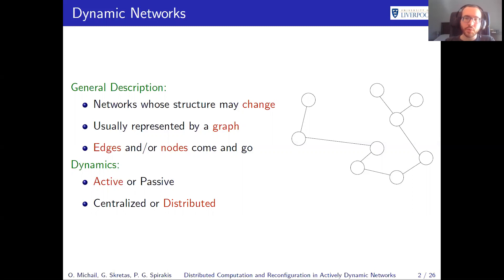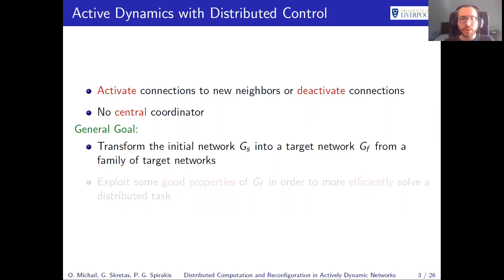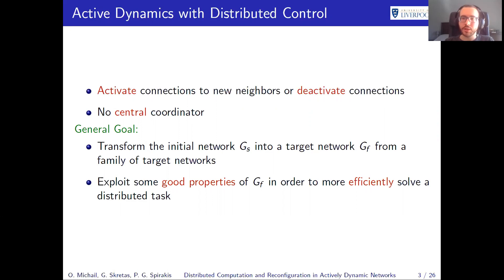In this paper, we are interested in actively dynamic networks with distributed control. We want nodes to be able to activate connections with new neighbors or deactivate pre-existing connections. There is no central coordinator, so every node makes its own decision based on local information. Our goal is to solve a distributed task, but instead of going straight for that, we first transform the initial network into a target network with good properties, which we then exploit to efficiently solve the distributed task.